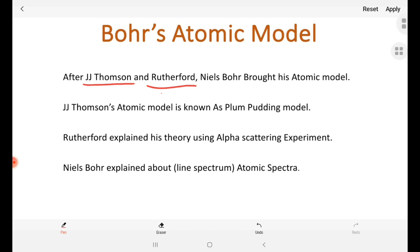J.J. Thomson's Atomic Model is a Plum Pudding Model. Here are the electrons. For example, a watermelon.